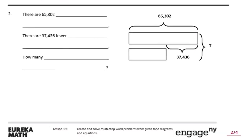Number two: there are 65,302 blanks; there are 37,436 fewer blanks; how many blanks total? Looking at the tape diagram, we have 65,302 of something, and the difference between the two tape diagrams is 37,436. We want to find the total.